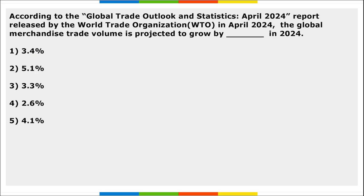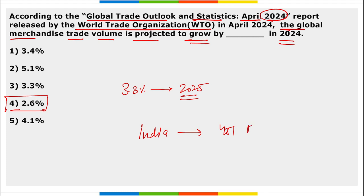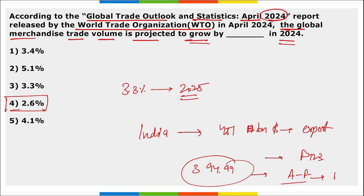According to the Global Trade Outlook and Statistics of April 2024 report released by the World Trade Organization, the global merchandise trade volume is projected to grow by 2.6 percent in 2024 and 3.3 percent in 2025, as the demand for traded goods rebounds after the contraction in 2023. India clocked 451 billion dollars of goods exported in FY23, and 394.99 billion dollars from April to February in FY24.